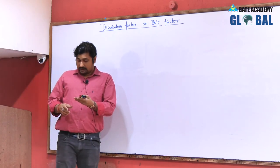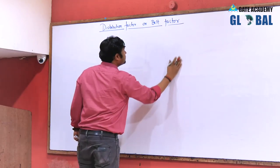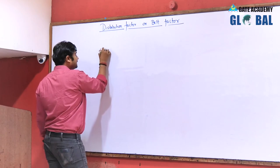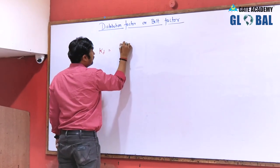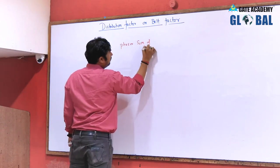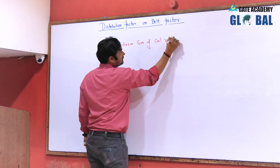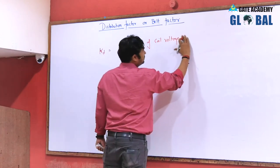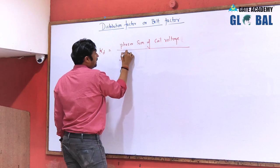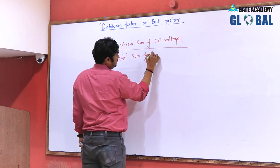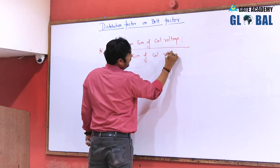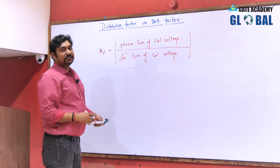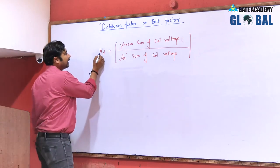The overall induced EMF is slightly reduced, and the factor by which the overall voltage under each phase is reduced is called the distribution factor, belt factor, or breadth factor. This is represented as Kd, defined as the phasor sum of coil voltages to the arithmetic sum of coil voltages. The factor by which the arithmetic sum is reduced due to distribution is called the distribution factor Kd.